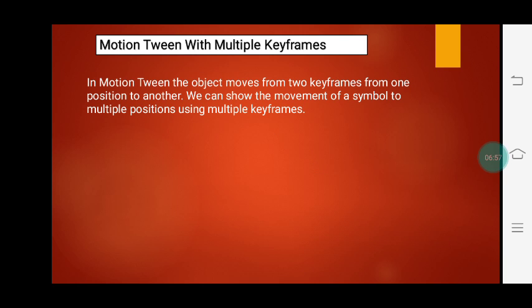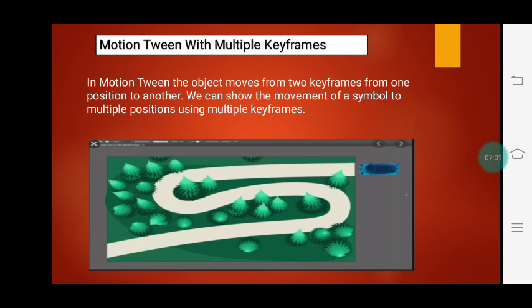Now, Motion Tween with Multiple Keyframes. Multiple Keyframe means: in Motion Tween, the object moves from one position to another position between two keyframes. We can show the motion of a symbol to multiple positions using multiple keyframes. For example, you can bounce a ball from one position to another position by using Motion Tween with Multiple Keyframes.